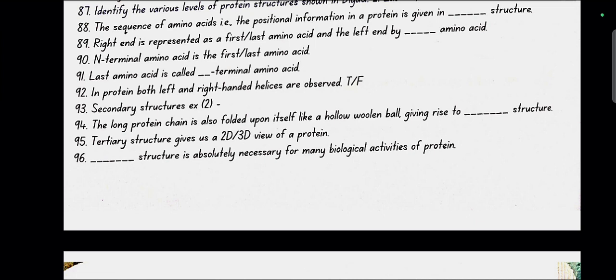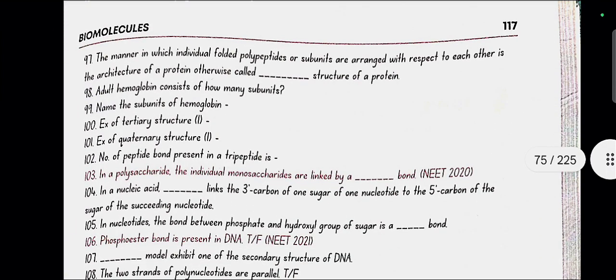Secondary structure examples are alpha helix and beta pleated sheets. The long protein chain is also folded upon itself like a hollow woolen ball giving rise to tertiary structure. Tertiary structure gives a 3D view of protein. Tertiary structure is absolutely necessary for many biological activities of protein. The manner in which the individual folded polypeptides or subunits are arranged is quaternary structure.